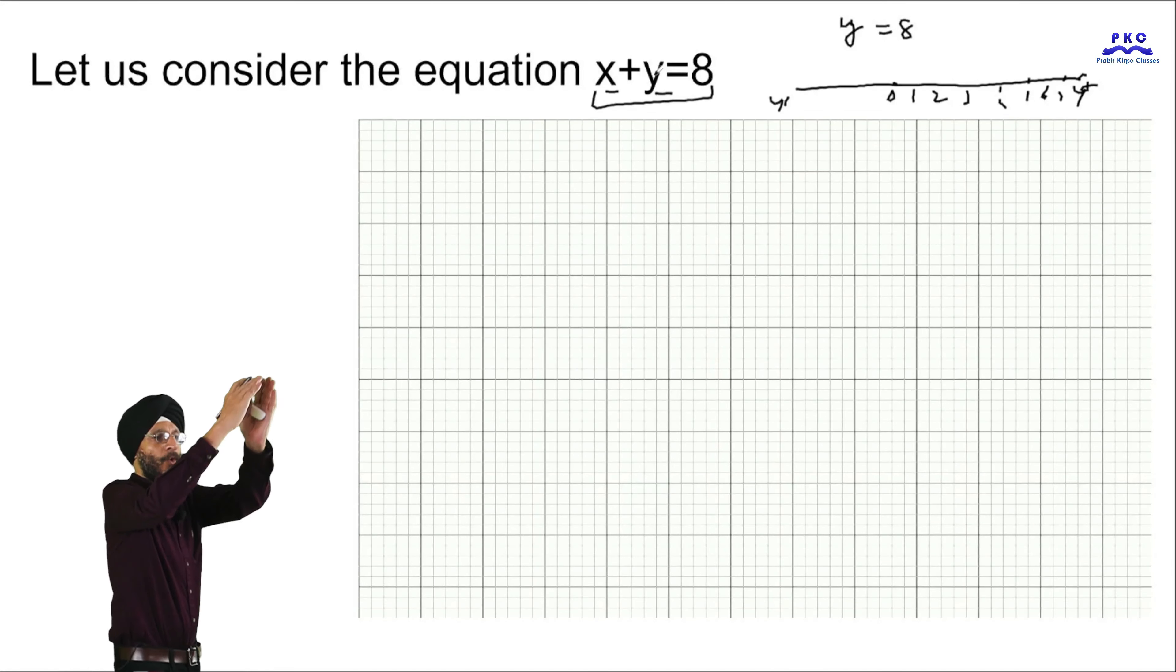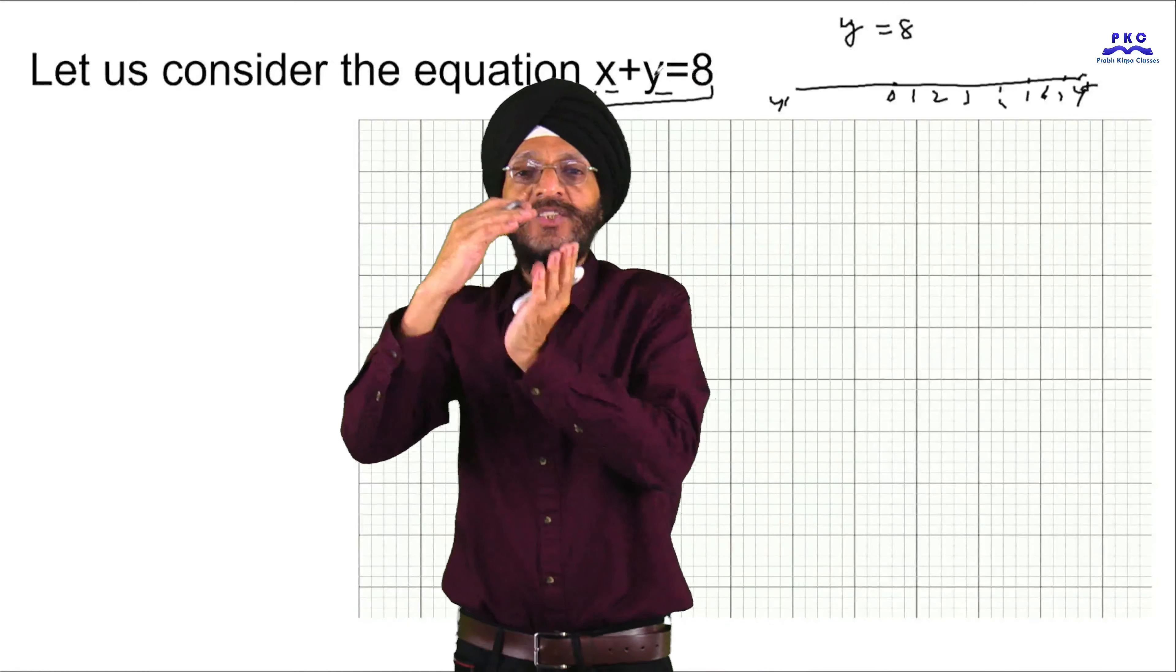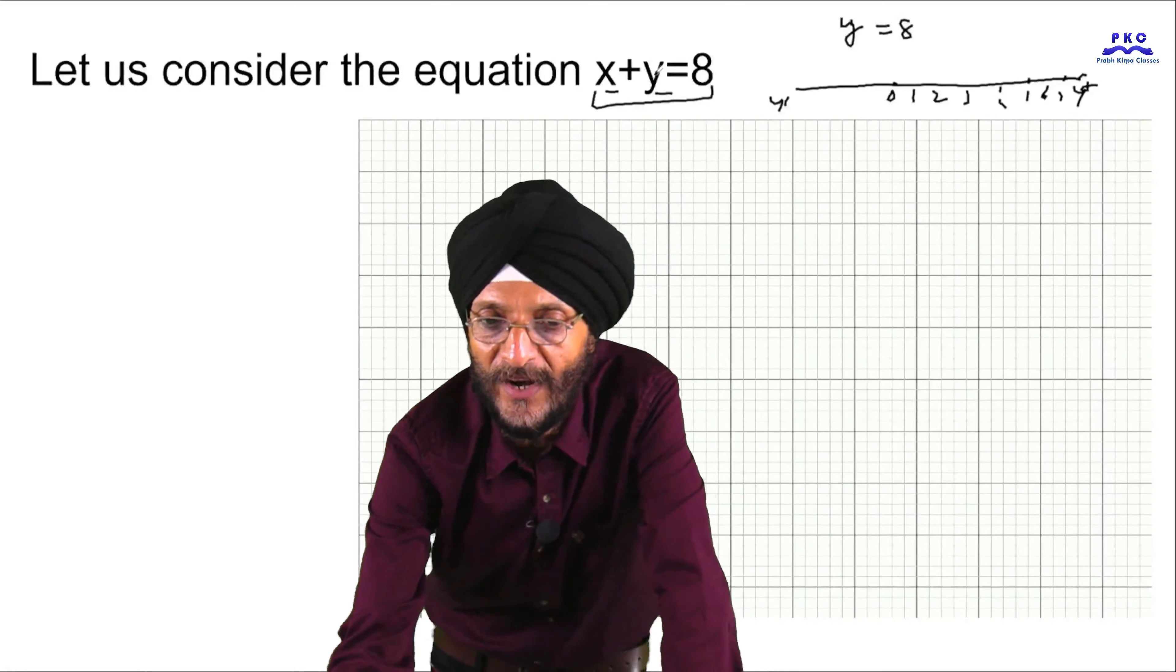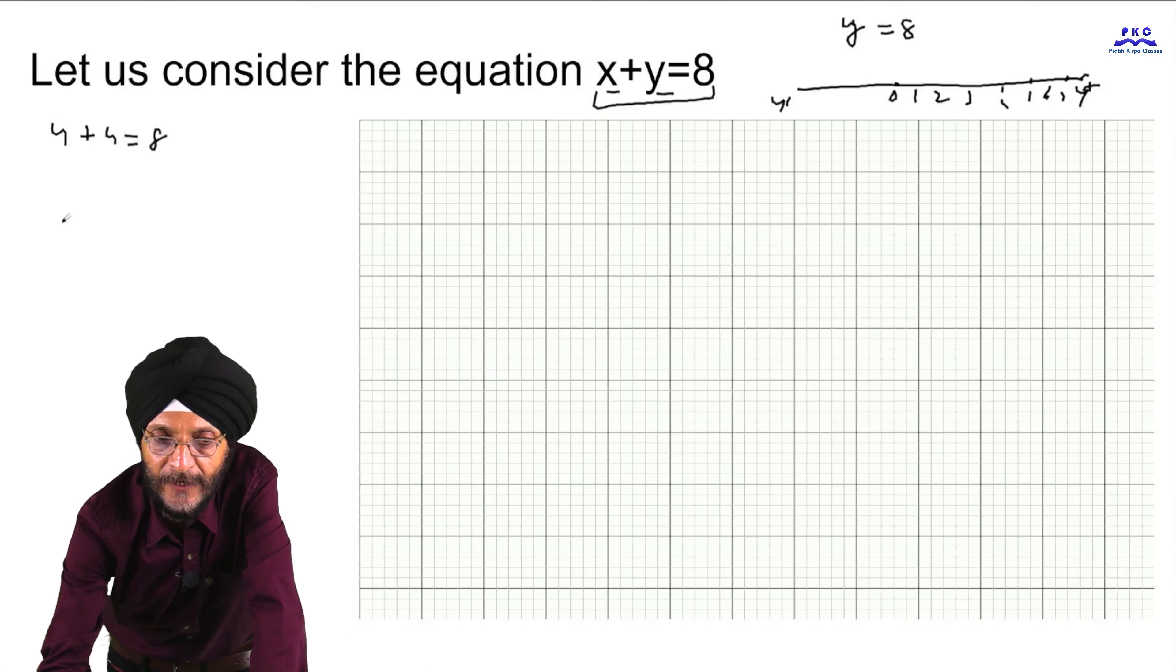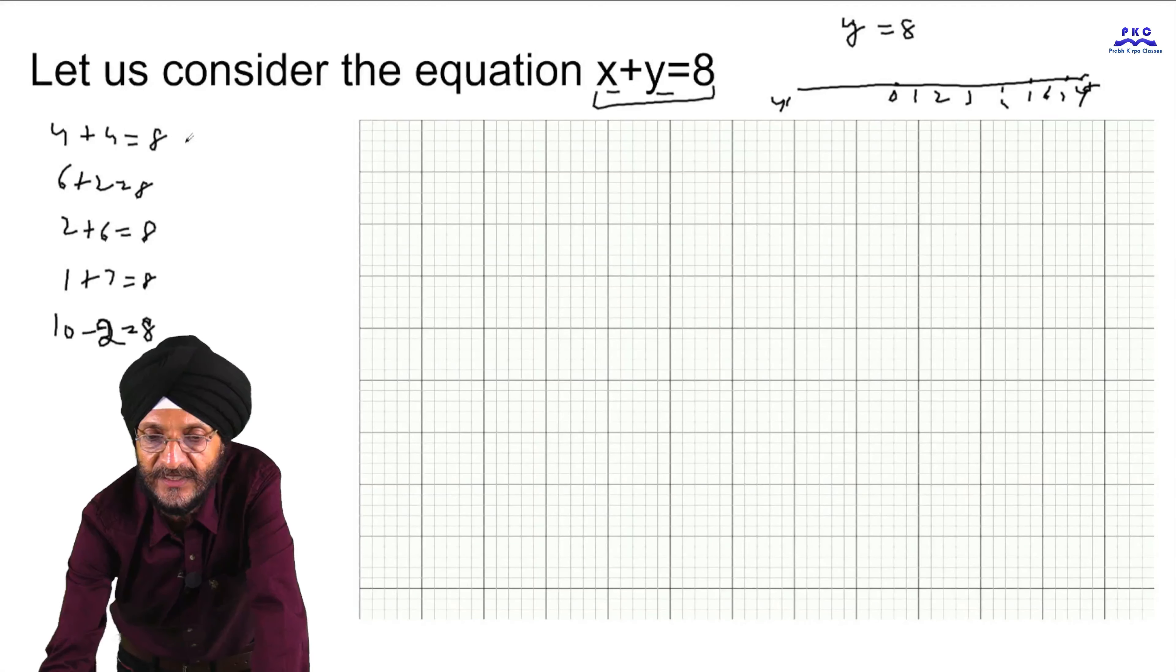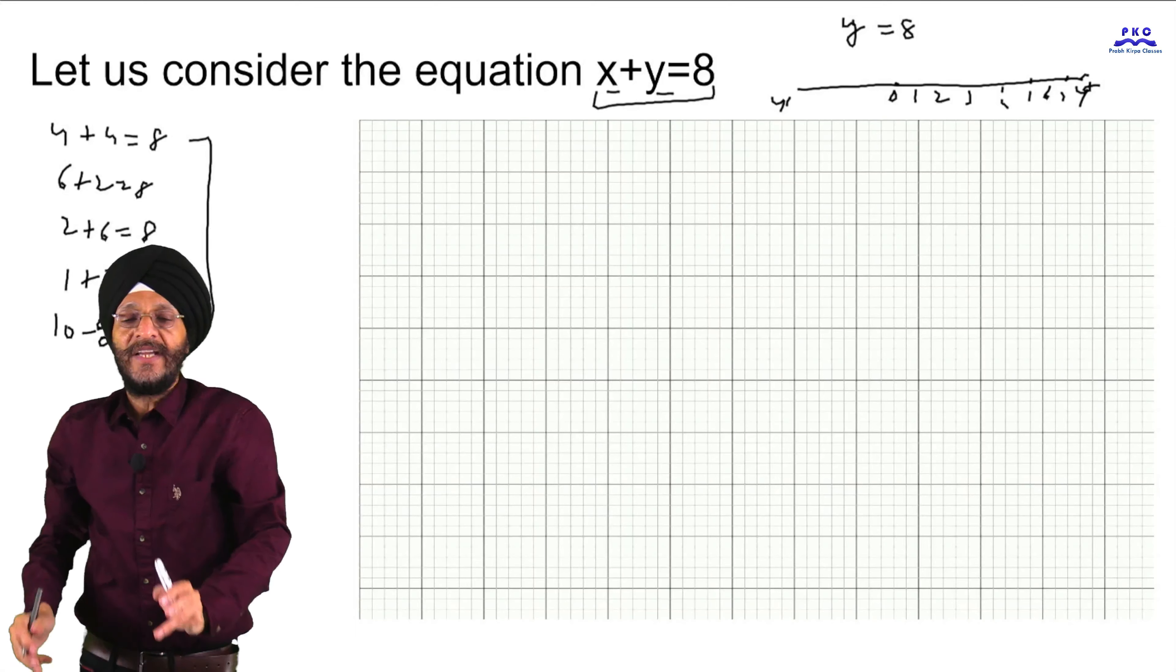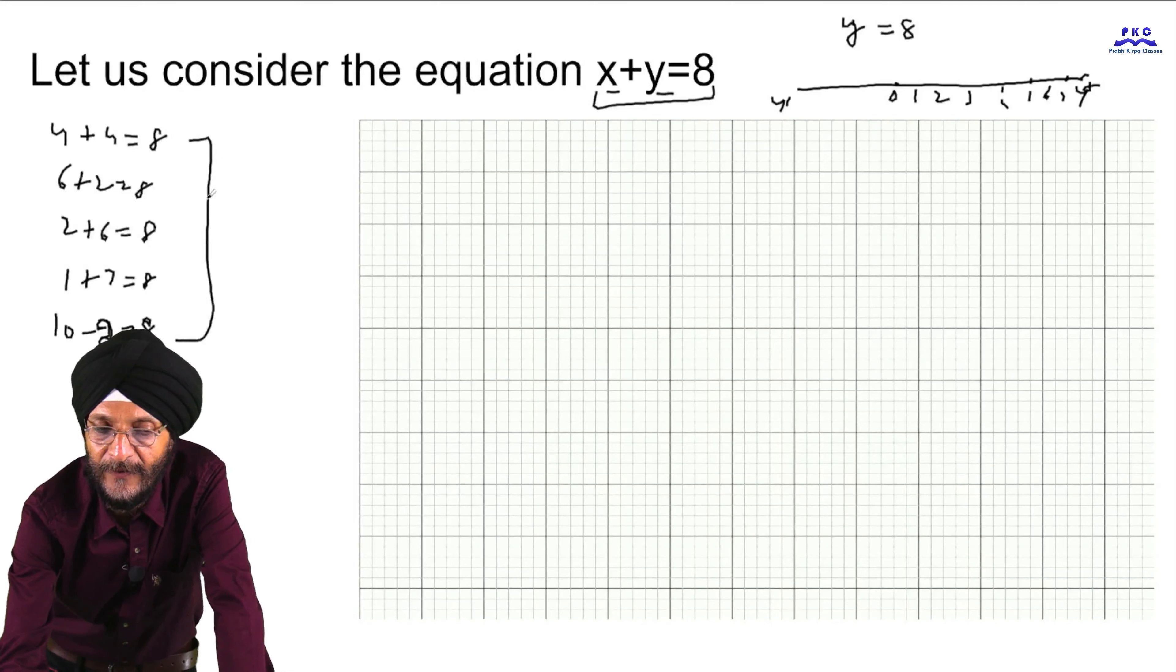When we have to draw or to make the geometrical representation of the equation, we have to find two solutions. In this case, we can consider it as 4 plus 4 is equal to 8, 6 plus 2 is equal to 8, or 2 plus 6 is equal to 8, or 1 plus 7 is equal to 8, or 10 minus 2 is equal to 8. So all these can be the possible solutions. And on the basis of any of two of these solutions, we can form the graph.